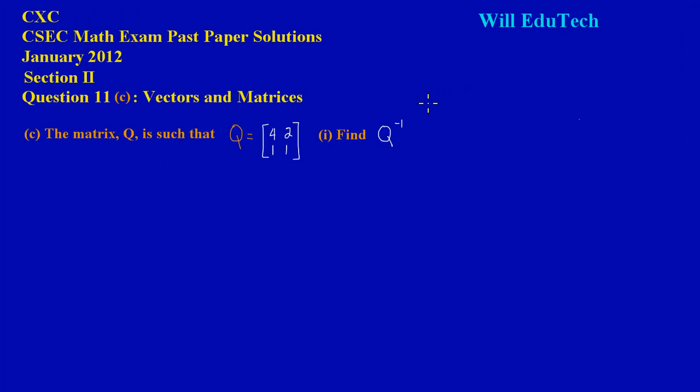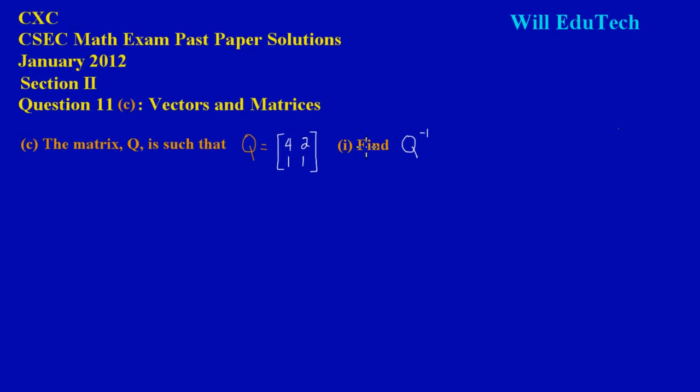Nice having you again, my friends, here on Will EduTech. Now in the solution to question 11c, they have stated that the matrix Q is such that Q is equal to [[4, 2], [1, 1]] and we're asked to find the inverse of Q.